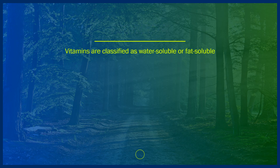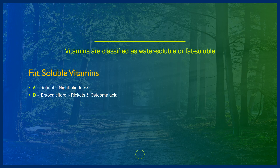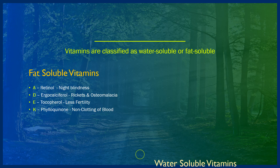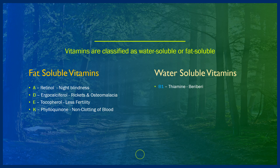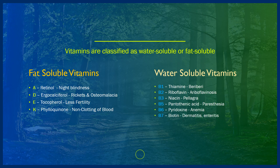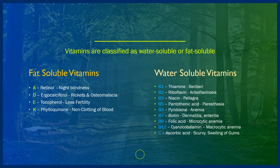Summary: Vitamin is a nutrient that the body needs in small amounts to function and stay healthy. Vitamins are classified as water-soluble and fat-soluble. Fat-soluble vitamins — Vitamin A (retinol): deficiency leads to night blindness; Vitamin D (ergocalciferol): rickets and osteomalacia; Vitamin E (tocopherol): reduced fertility; Vitamin K (phylloquinone): non-clotting of blood. Water-soluble vitamins — B1 thiamine: beriberi; B2 riboflavin: ariboflavinosis; B3 niacin: pellagra; B5 pantothenic acid: paresthesia; B6 pyridoxine: anemia; B7 biotin: dermatitis and enteritis; B9 folic acid: megaloblastic anemia; B12 cyanocobalamin: macrocytic anemia; Vitamin C ascorbic acid: scurvy and swelling of gums.